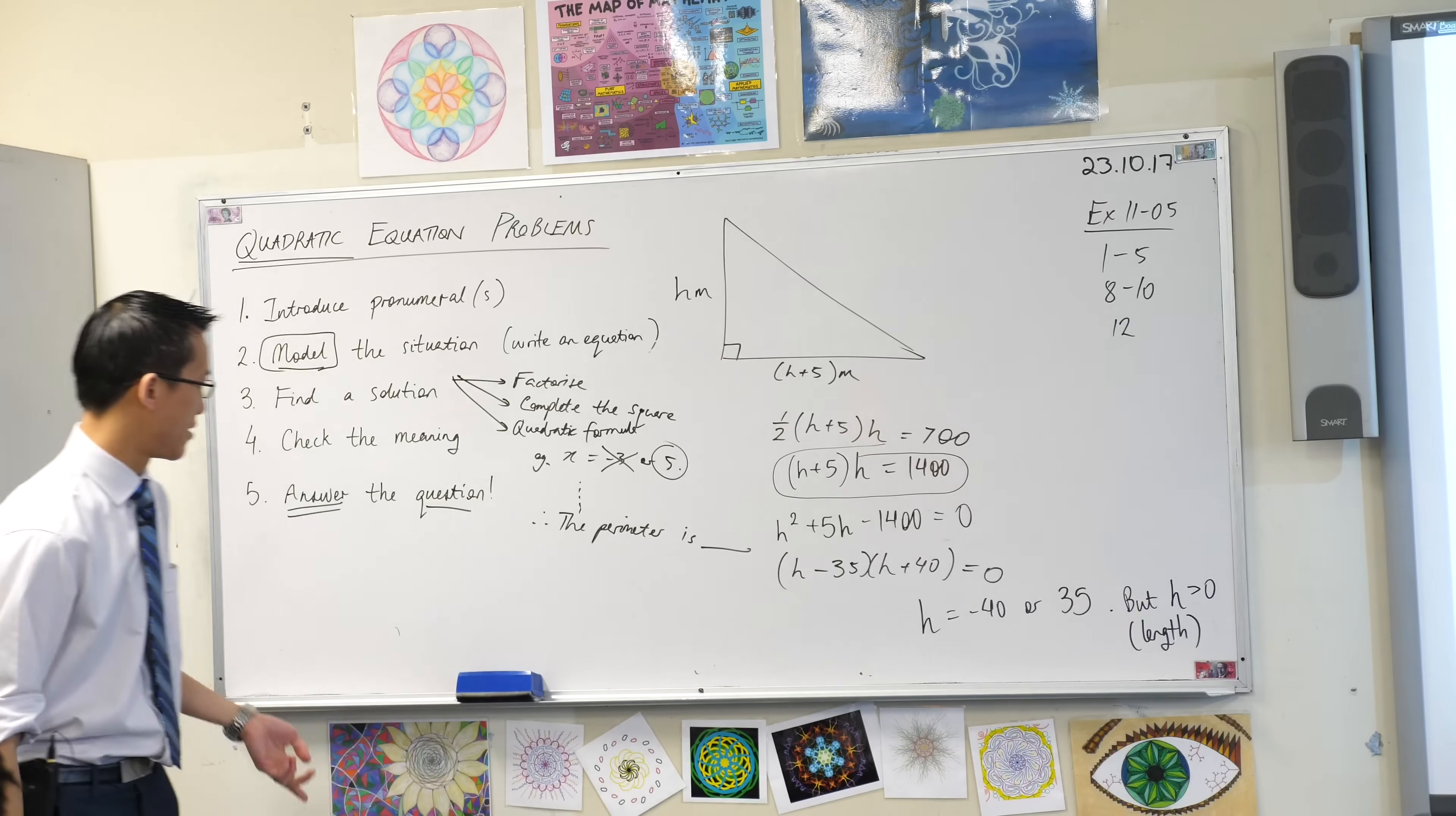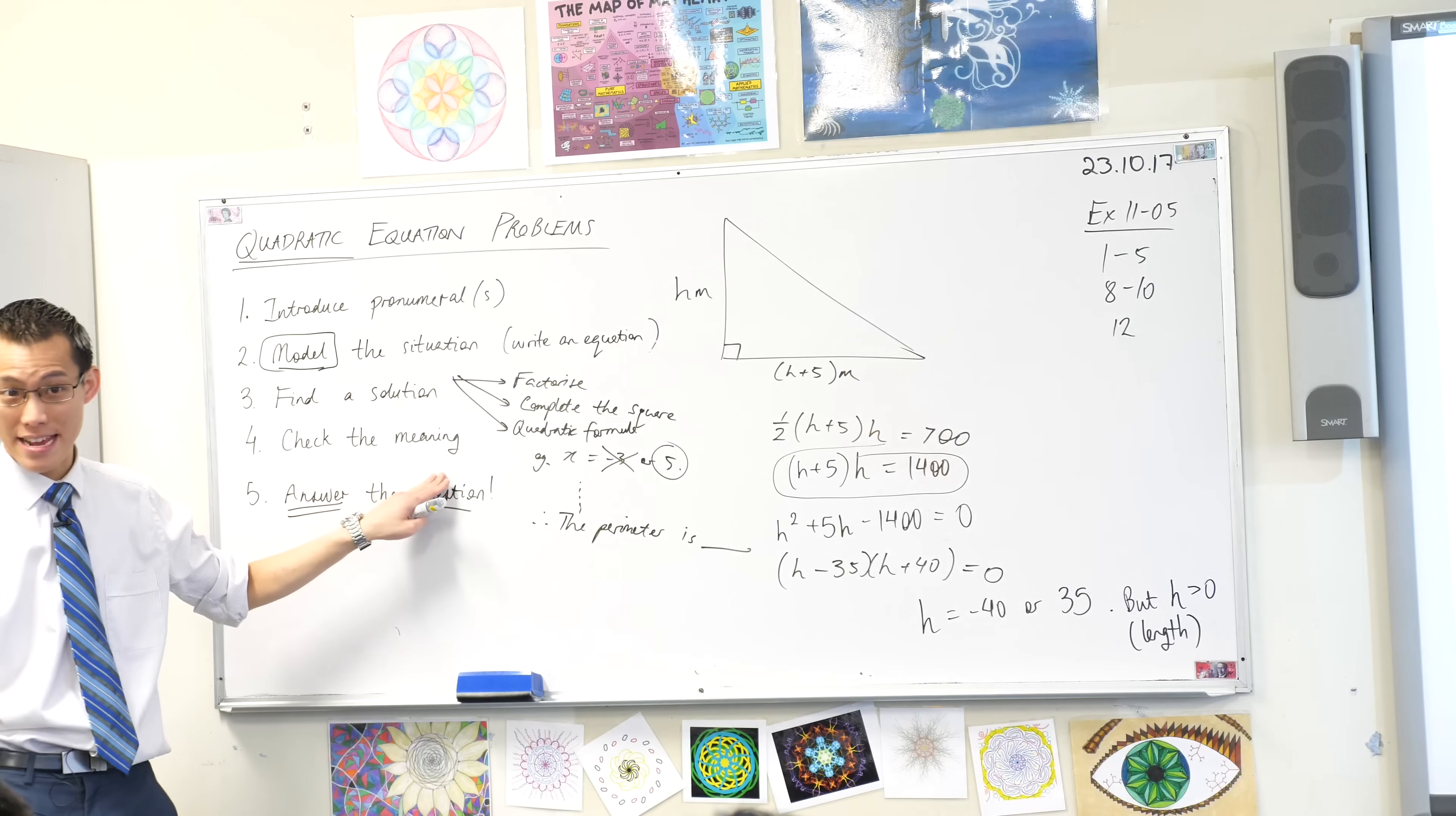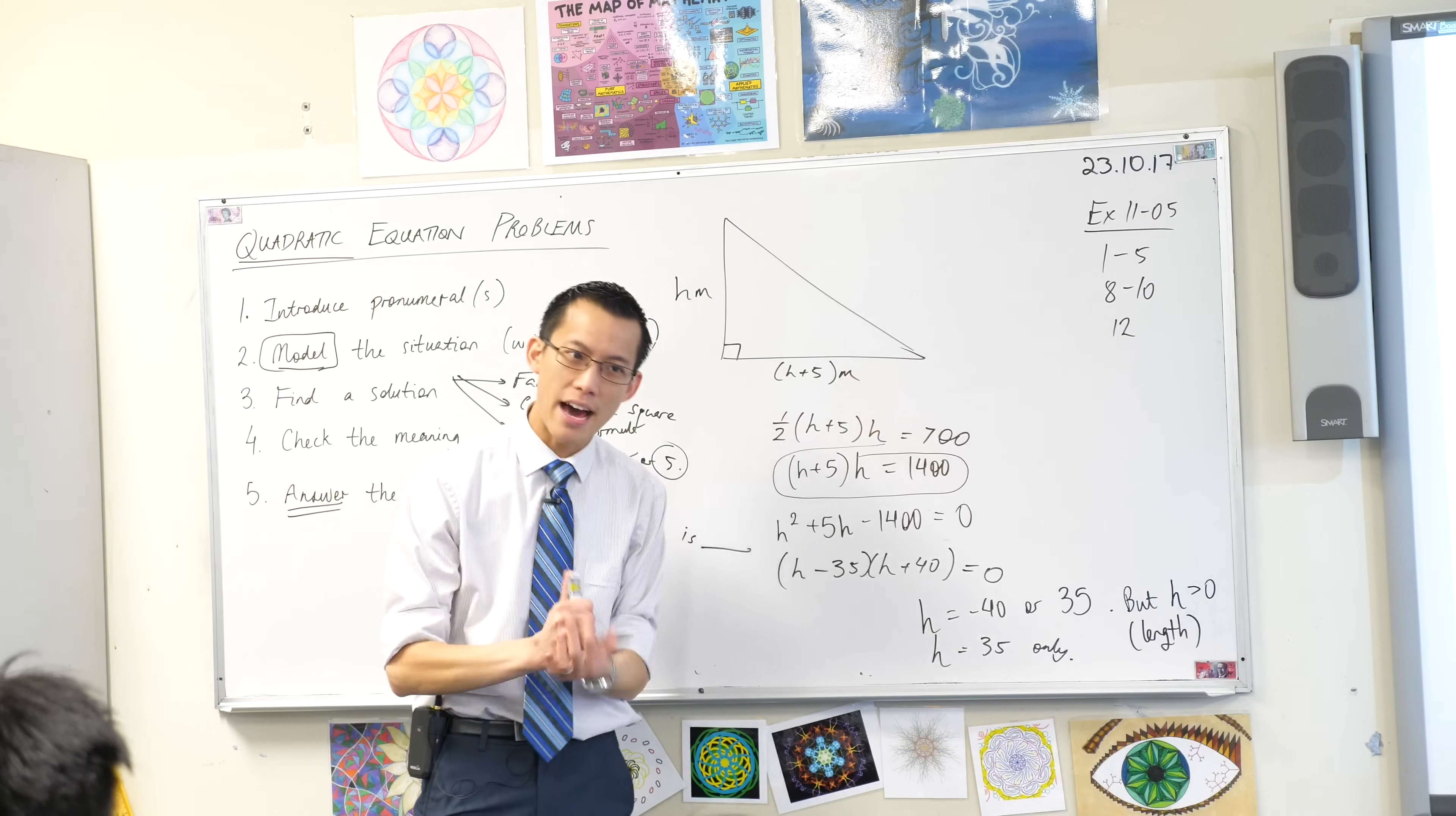I'm almost at the end. I've checked the meaning. I've noticed that out of my two solutions, I've got a solution. I've checked what it means. And for that reason, I've excluded one of the answers. So h equals 35 only. I'm going to encourage you to put that word only there because it indicates you've thought about the two solutions and you've discarded one of them for a reason. So that's why you only end up with one of them.